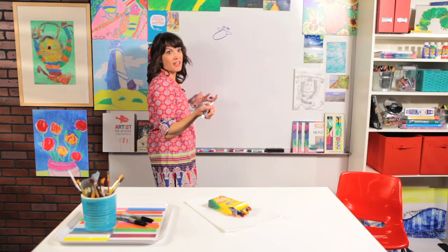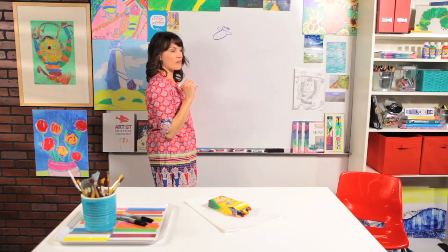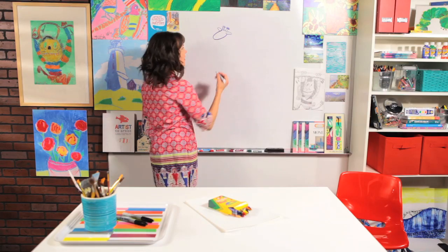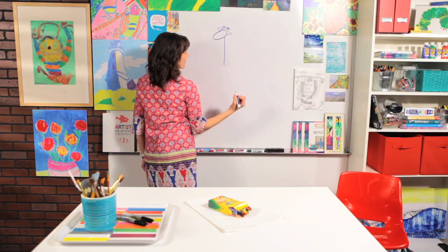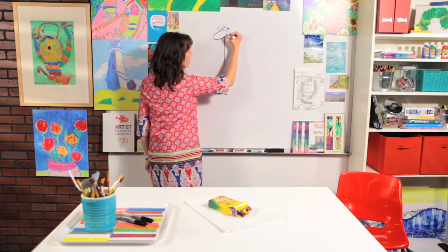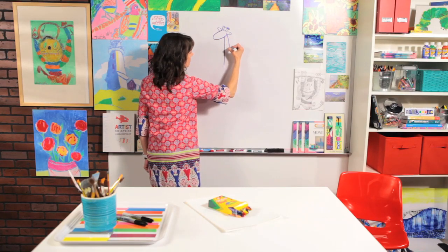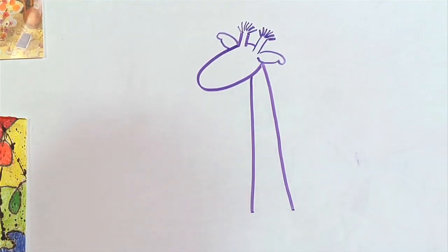Remember, if you make a mistake, it's okay. Keep drawing, and make it your own. Now let's draw that long neck. We're going to come down, and down, and notice that my line is going to get a little bit bigger as I come towards the body.